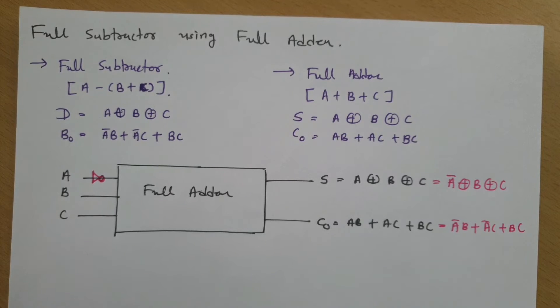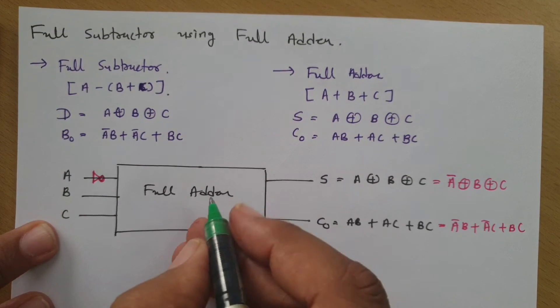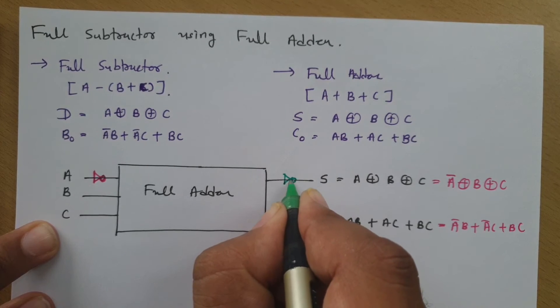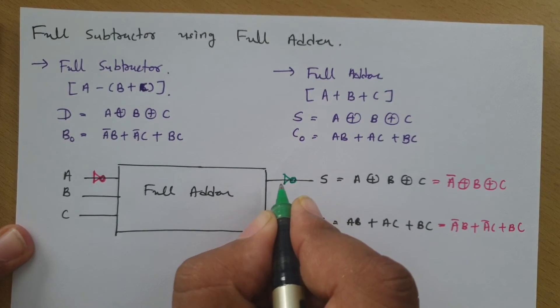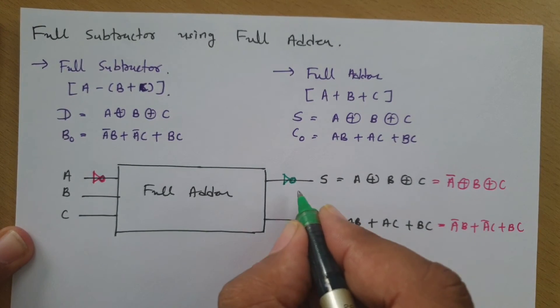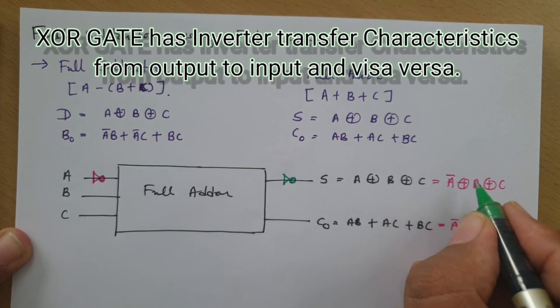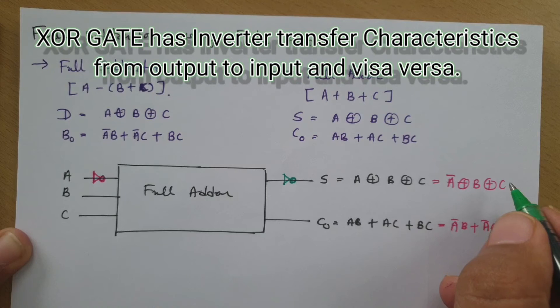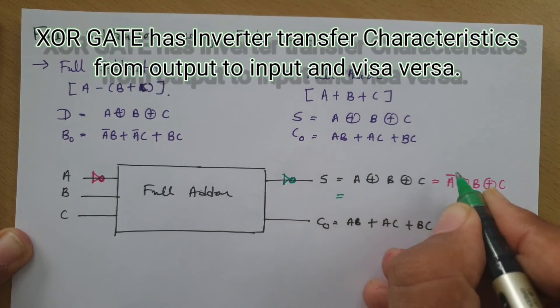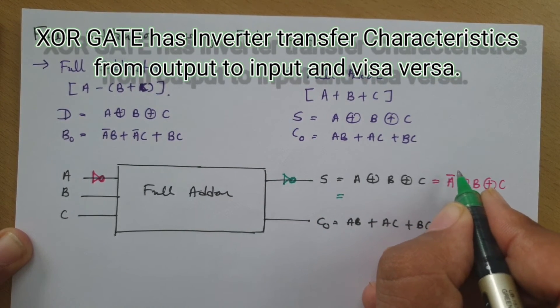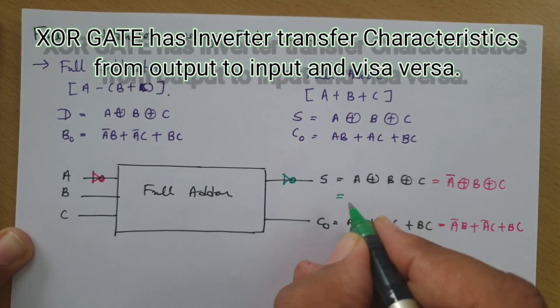So now all I can do is connect one more inverter over here. If I connect one more inverter, then double inversion will happen. And as double inversion is happening, this will be translating this A bar into A.